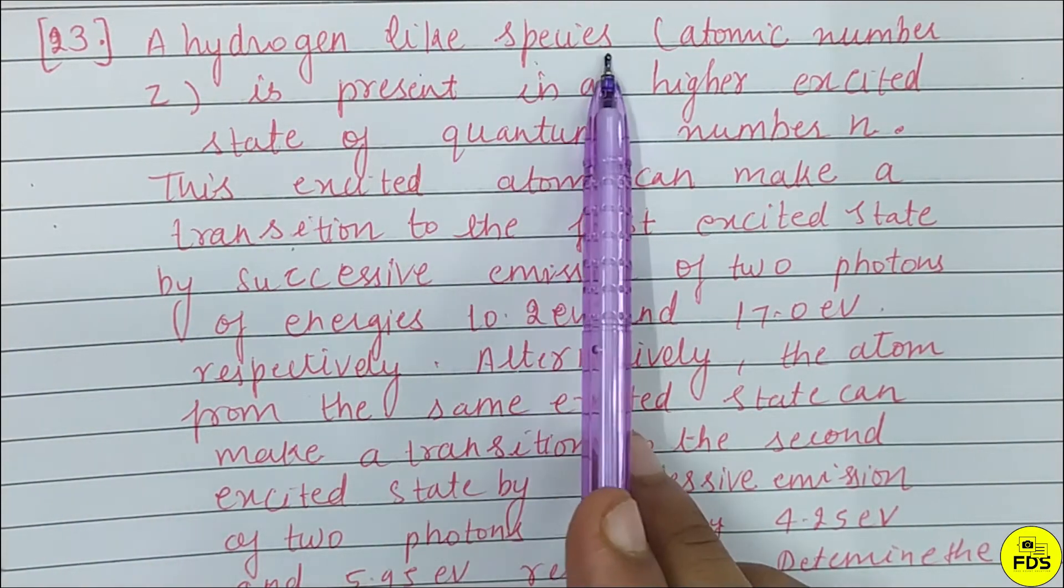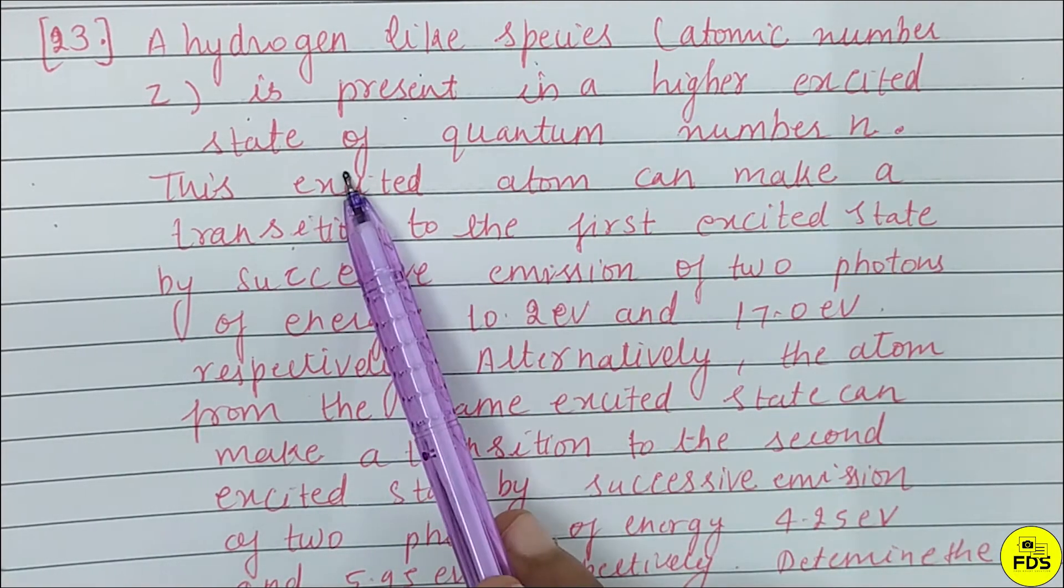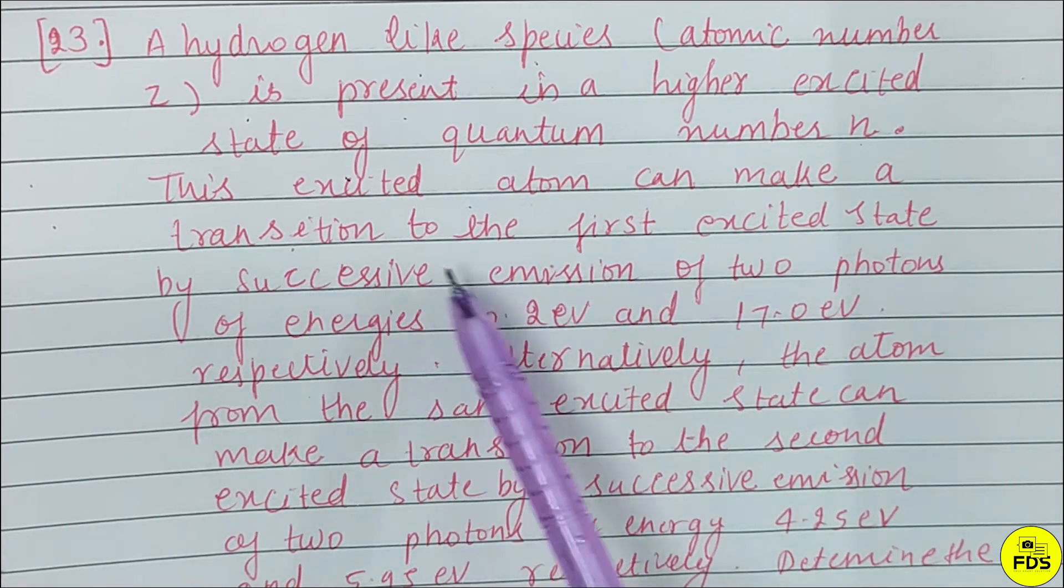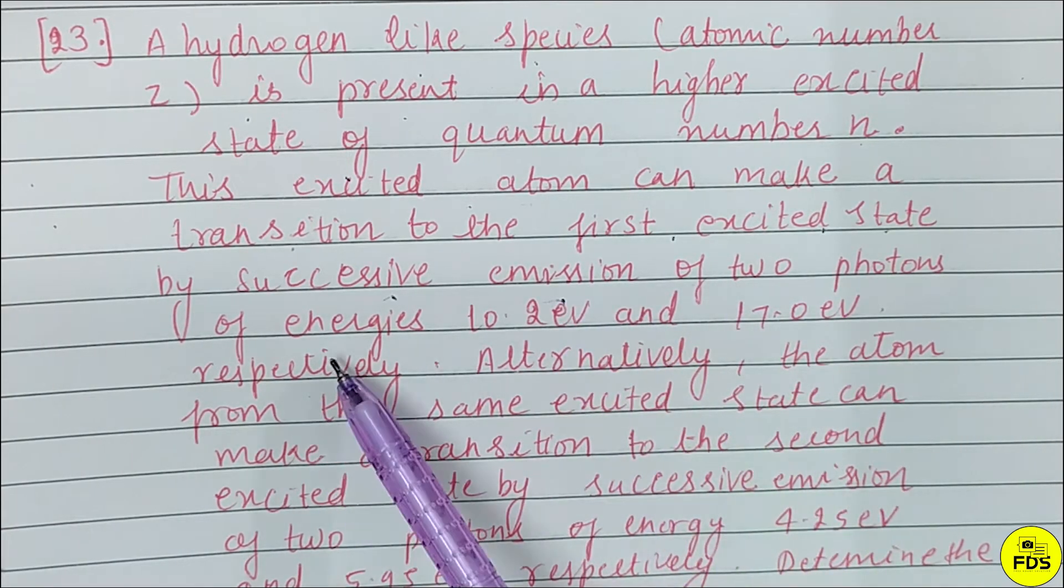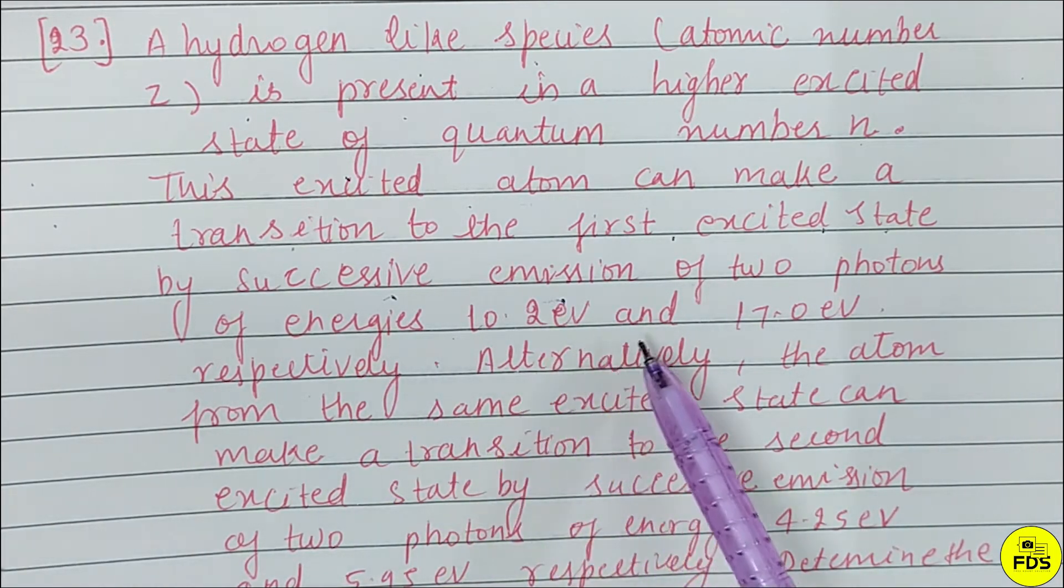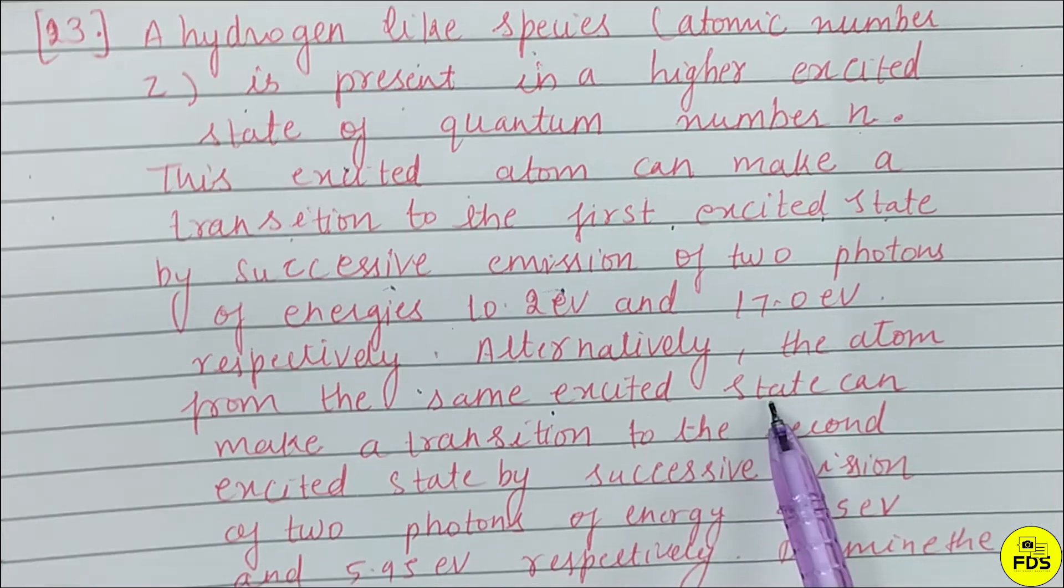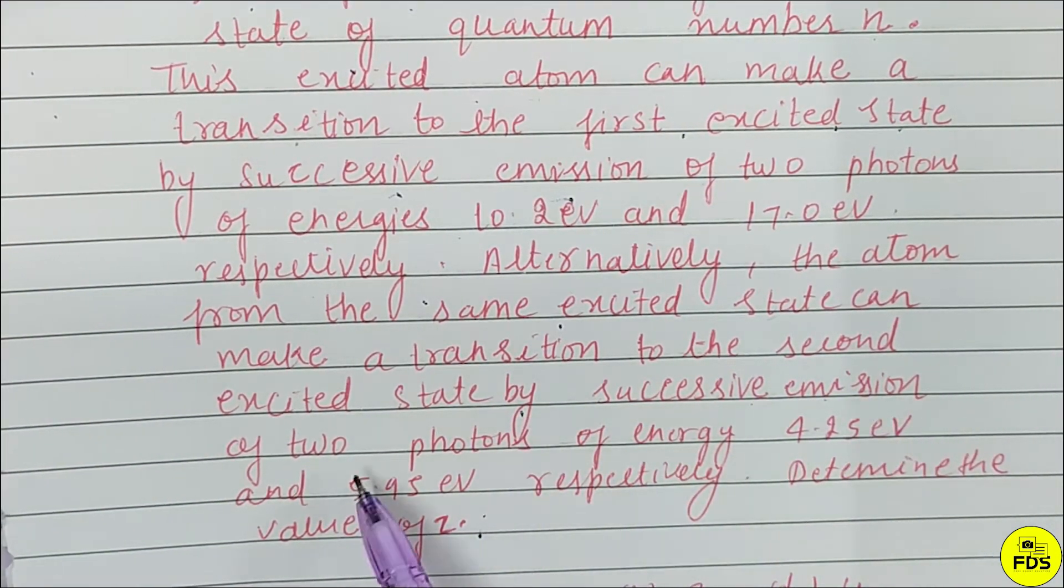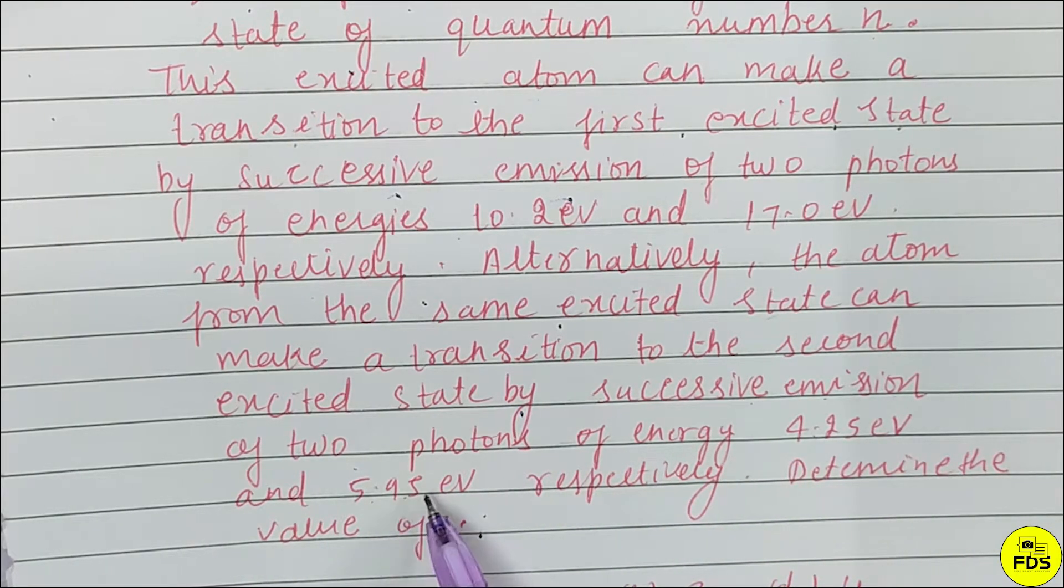A hydrogen-like species of atomic number Z is present in a higher excited state of quantum number n. This excited atom can make a transition to the first excited state by successive emission of two photons of energies 10.2 eV and 17.0 eV respectively. Alternatively, the atom from the same excited state can make a transition to the second excited state by successive emission of two photons of energy 4.25 eV and 5.9 eV respectively.